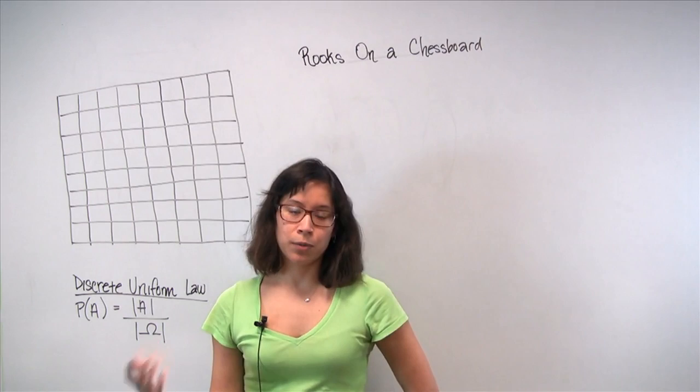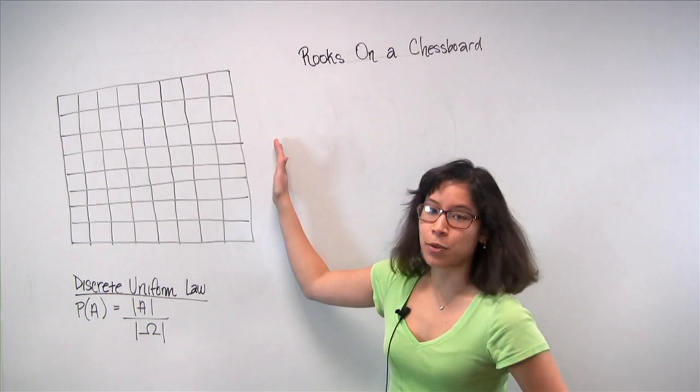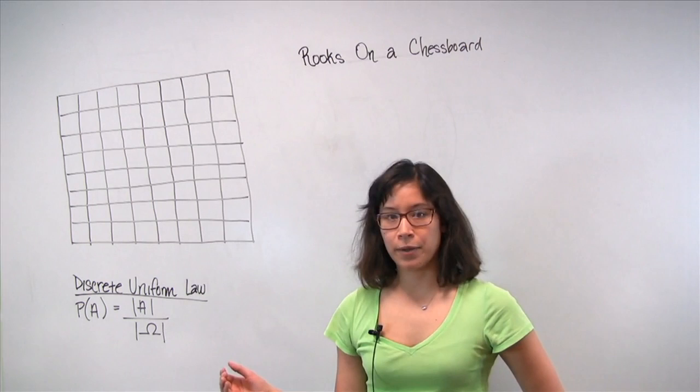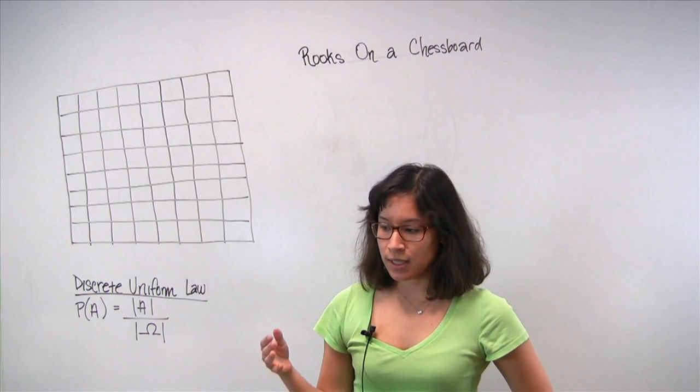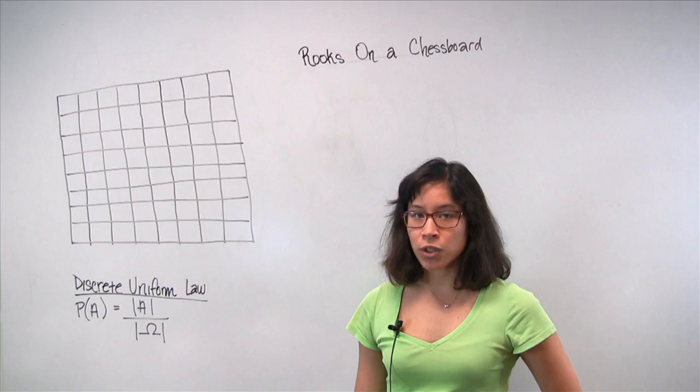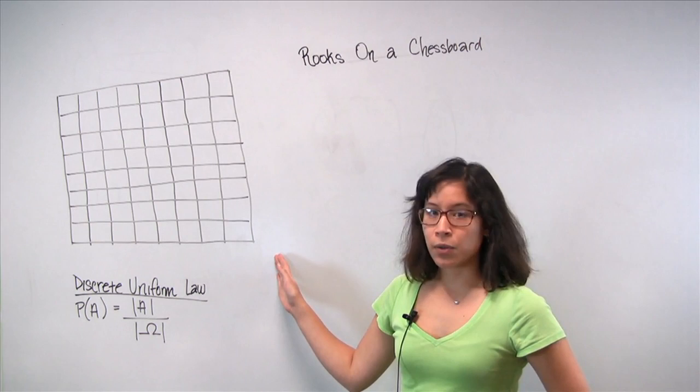So this is just one drill problem to help you get those skills under your belt. What does the Rooks on a Chessboard problem ask you? Well, you're given an eight by eight chessboard, which I've tried to draw here. It's not very symmetrical, sorry about that. And you are told that you have eight Rooks.